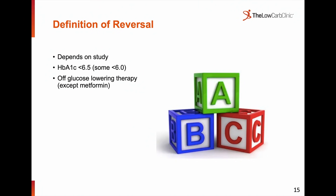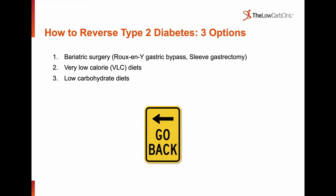How do we define reversal? It really depends on the study — there are different definitions. Generally speaking, an HbA1c less than 6.5 is considered non-diabetic, and usually people would consider that to be off medications, though including metformin within that definition is something some authors discuss. There are three ways we can reverse type 2 diabetes: bariatric surgery, very low calorie diets, and low carbohydrate diets.